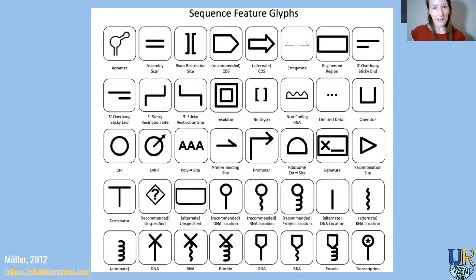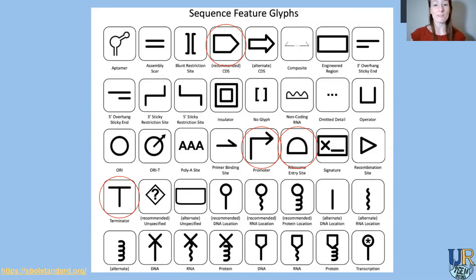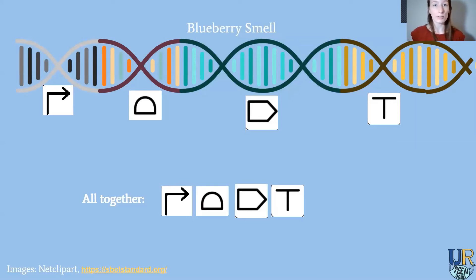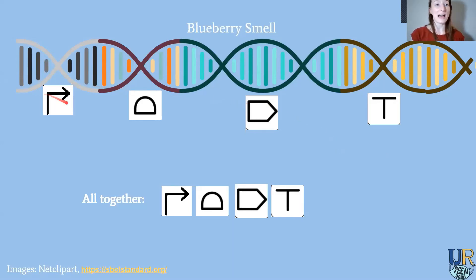Pause the video and see if you can find the SBOL symbols on the slide. Did you find them? I circled them in red — those are the pictures that represent the four biobricks we talked about today. Now let's revisit our blueberry smell DNA sequence one last time, but instead of labeling the biobricks A through E or by name like promoter, ribosome binding site, coding region, and terminator, we're going to use the pictures that describe what these DNA sequences do. We're not using any words to describe what these biobrick parts are.